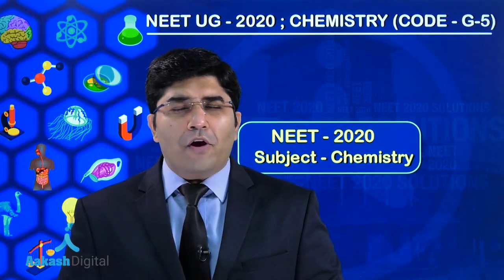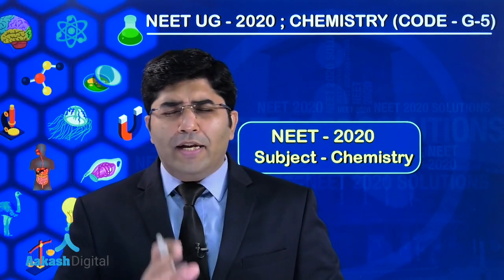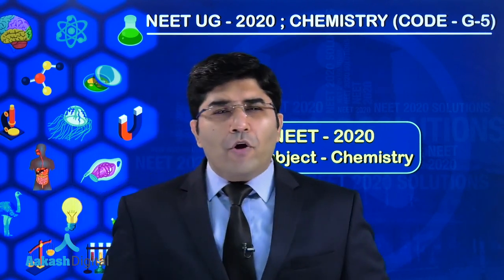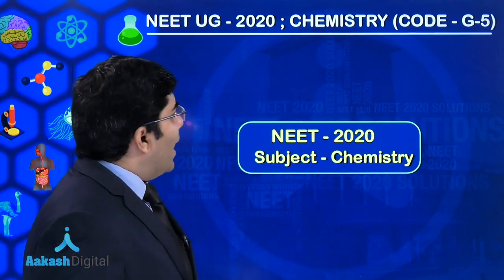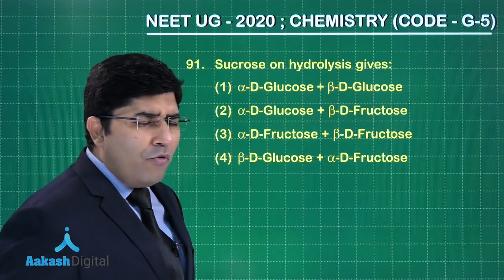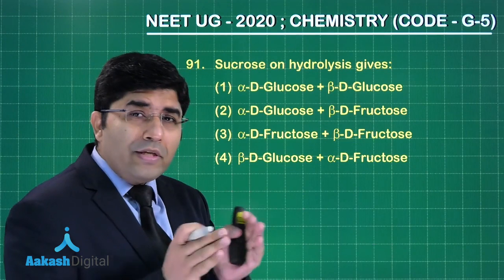Hi guys, welcome to the video solution of the chemistry part of NEET 2020. We are going to discuss the paper that has code G5. Now let's move on to question number first in chemistry, that is question number 91.